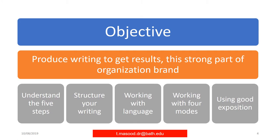Next I will talk about the technical paper objective. In the technical paper objective: first, produce writing to get the result and build a strong organizational brand. The elements include understanding the five steps, structuring your writing material, and working with language. Be careful about what level of language you use in your technical write-up — sometimes difficult styles of English literature create ambiguity, so keep it simple and smooth to attract readers.